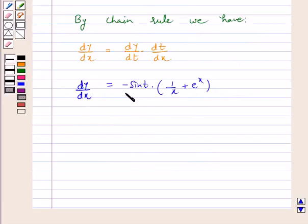Hence dy/dx = -sin t × (1/x + e^x). Now substitute the value of t here. So dy/dx = -sin(log x + e^x) × (1/x + e^x).